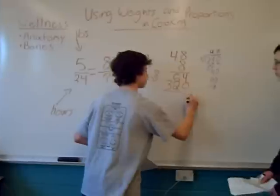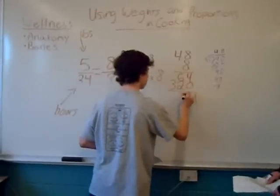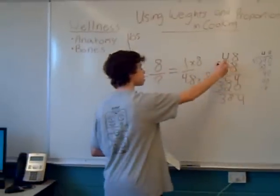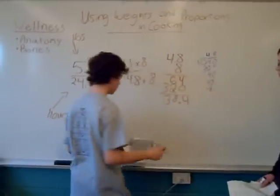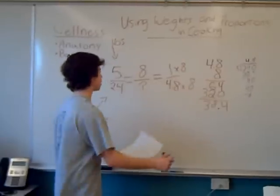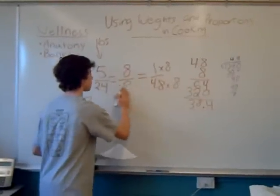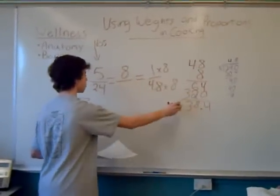Add them together, you get 384. Since there's one decimal place in the question, we need to add a decimal place in the answer. So now we know that to defrost an 8 pound turkey, it takes 38.4 hours.